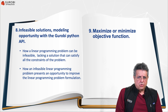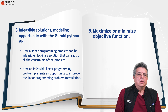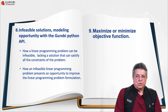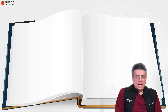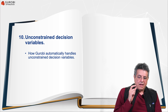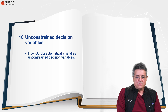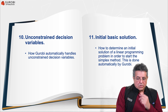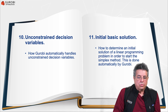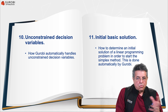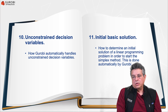In the following sections, summarized in a single video, we are going to discuss how to tackle maximization and minimization linear programming problems. We will also discuss unrestricted variables that can be positive or negative, and how Gurobi deals with this type of variable. An important topic is how we generate an initial solution to use the simplex method, and how Gurobi handles this generation of an initial solution for an LP problem.